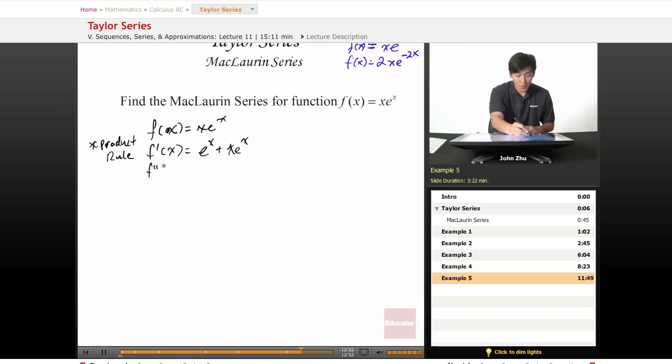So f second prime of x is going to be derivative of this term, e to the x, plus derivative of this term. Well, derivative of this term is simply equal to derivative of f of x. So we just replace this section over here.